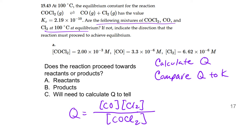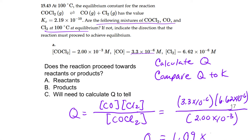Okay, so let's plug in some values for Q. Concentration of CO, 3.3 times 10 to the minus 6 moles per liter. Concentration of Cl2 is 6.62 times 10 to the minus 6 moles per liter. And then the concentration of COCl2 is 2 times 10 to the minus 3 moles per liter. And if I've done my math correctly, calculating all of this out, we end up with Q equals 1.09 times 10 to the minus 8.